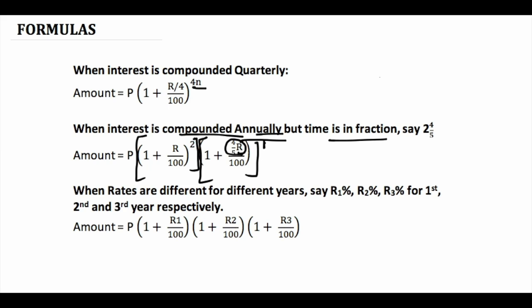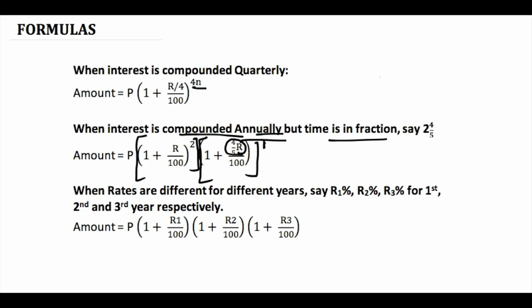When rates are different for different years, you have no option but to find them out separately. We have r1, r2, r3 as different rates of interest for different time periods. This is how we handle compound interest when rates of interest are given differently. These are the formulas for compound interest.